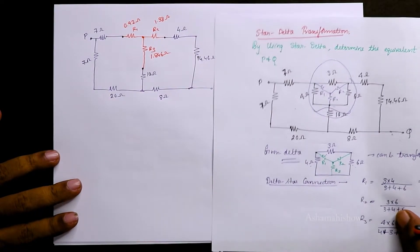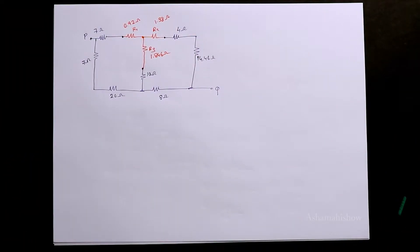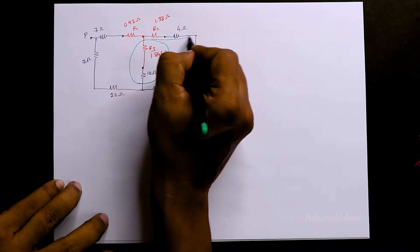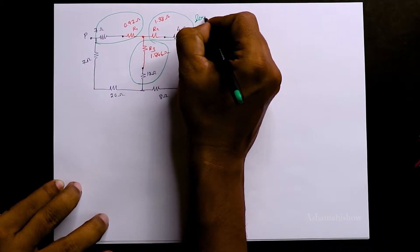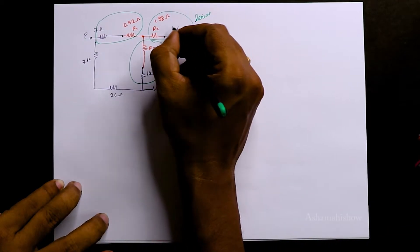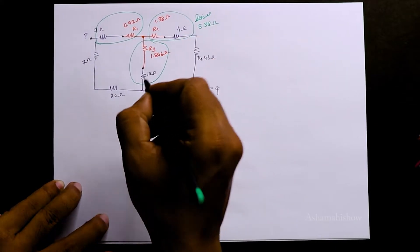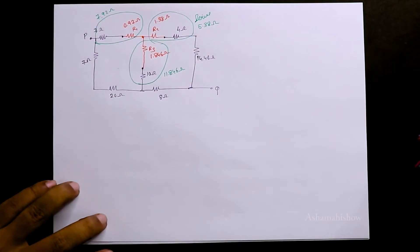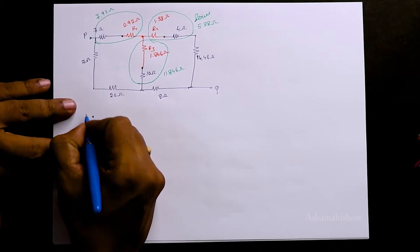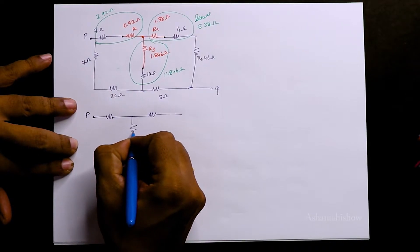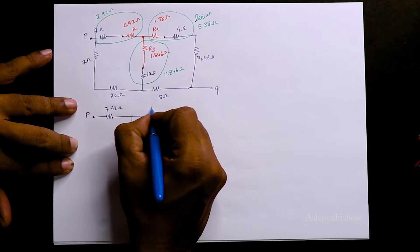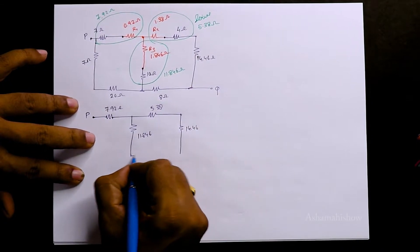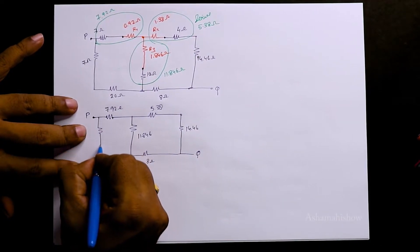Now we can see these two are in series, these two are in series, and these two are in series — we have three series connections. Just add them: 4 + 1.38 = 5.38 ohms; 10 + 1.846 = 11.846 ohms; 7 + 0.92 = 7.92 ohms. So we got three series combinations. Redrawing: we now have 7.92, 5.38, and 11.846 ohms, along with 14.46 and 8 ohms remaining.